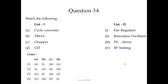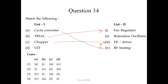Question number 34 - match the following. The cycloconverter is related to HVDC/RFPT applications. The TRIAC is related to a fan regulator. The chopper is used for a DC drive. The UJT (Unijunction Transistor) is used for a relaxation oscillator. So the correct sequence is 4-1-3-2, and the correct answer is option 3.